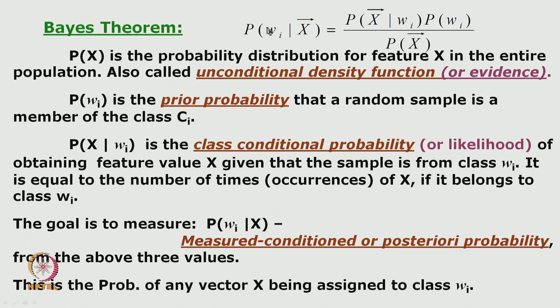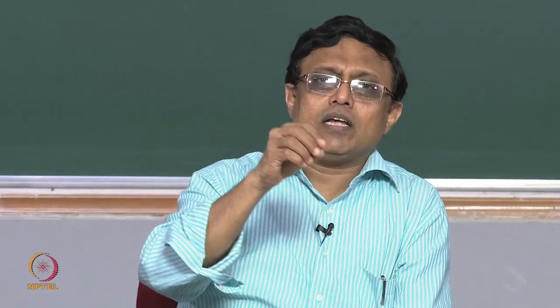Given all three terms on the right-hand side, a simple probabilistic estimate gives the left-hand side quantity — the posterior probability — which is the probability of feature vector x being assigned to class wi. You assign x to wi if the posterior probability is highest for that class. The rule is: whichever class satisfies the maximum posterior under Bayes gets the assignment, and the likelihood is computed using this formula.